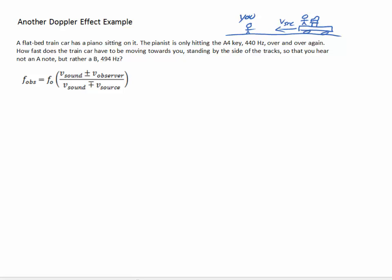And the question is, how fast does the train car need to go so that you hear not an A, but rather a B, which has a frequency of 494 Hz?